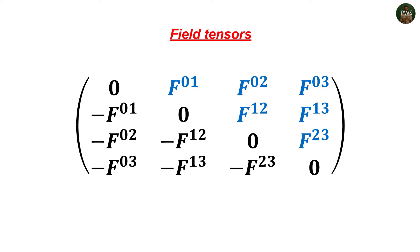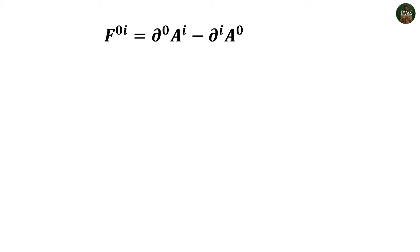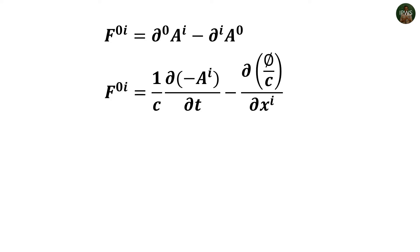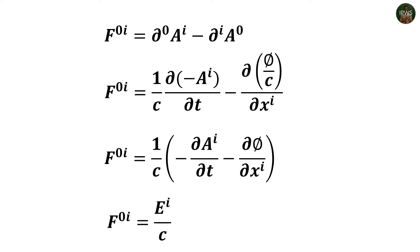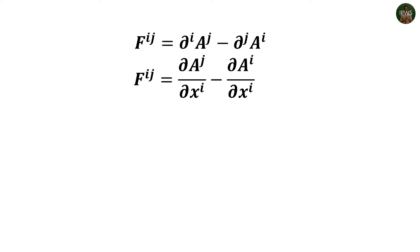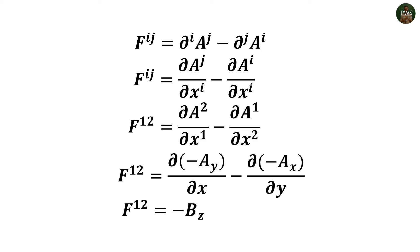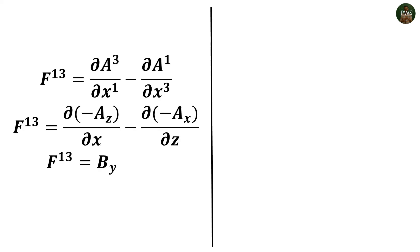We call F^(alpha beta) the field tensor. Our next job is to map its components to the actual fields. For F^(0i) where i runs from 1 to 3: del_0 = (1/c) partial time derivative, A_0 = phi/c (scalar potential), and their i-counterparts are spatial derivatives and negative vector potentials. Together, F^(0i) represents the three electric field components divided by c. For F^(ij) with both indices from 1 to 3: F^(12) = -B_z, F^(13) = +B_y, and F^(23) = -B_x.